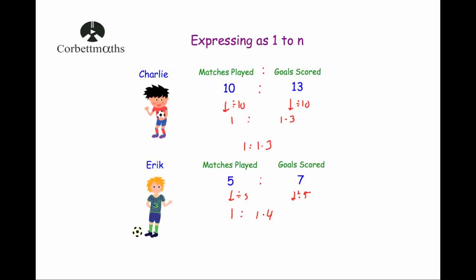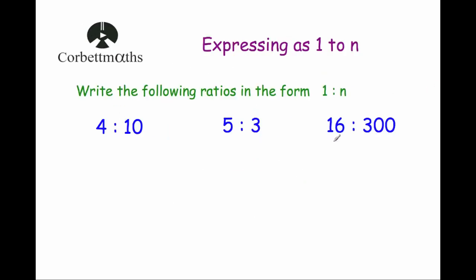Now let's look at some typical questions where we're asked to write ratios in the format 1 to n — making the number at the front equal to 1. First: 4 to 10. We want 1 at the front, so we divide both numbers by 4. 4 divided by 4 is 1, and 10 divided by 4 is 2.5. So 4 to 10, written in the format 1 to n, is 1 to 2.5.